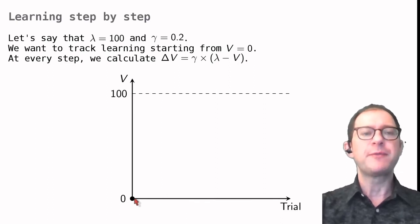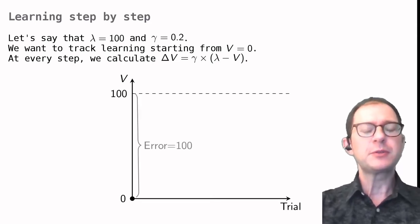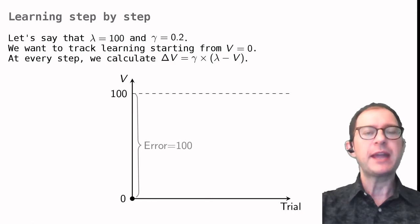We start from zero as our associative strength V, and we apply the Rescorla-Wagner learning equation with lambda equal 100 and gamma equal 0.2. The first thing to note is that at the beginning, the error is 100. Lambda is 100, V is 0, so lambda minus V is 100.